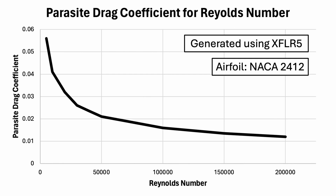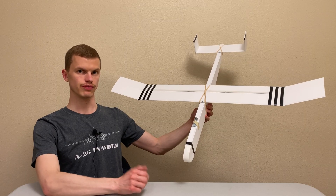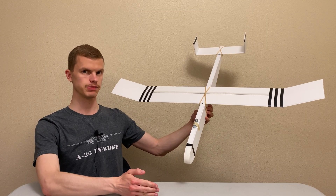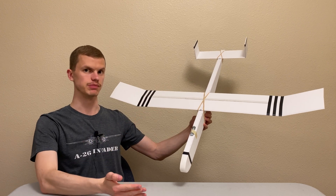Now that we know how to calculate the Reynolds number, let's take a look at how it affects our planes. The first thing to point out is that the Reynolds number does not affect the lift coefficient. Since the induced drag coefficient is dependent on the lift coefficient, it is not affected by the Reynolds number either. The situation is different, however, for the parasite drag coefficient. In this graph, we can see that at lower Reynolds numbers the parasite drag coefficient increases significantly. Increasing the Reynolds number reduces the parasite drag coefficient. This means you can reduce the parasite drag coefficient by designing planes with greater chord lengths and by designing them to fly faster.